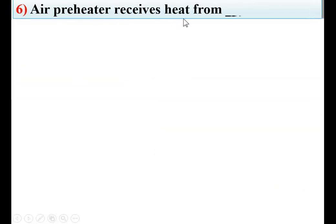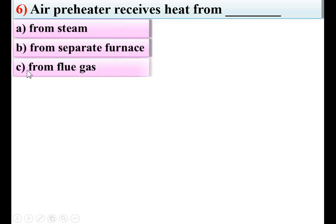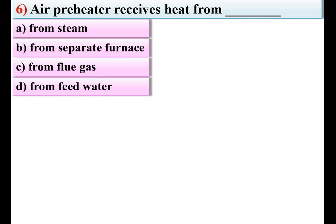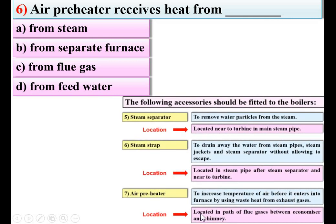Air preheater receives heat from — options: from steam, from a separate furnace, from flue gas, from feed water. The function of the air preheater is to increase the temperature of air before it enters the furnace by using waste heat from exhaust gases. So from flue gas — option C — is the right answer.